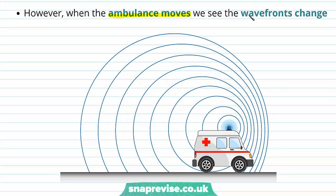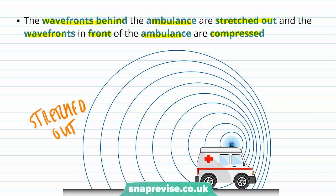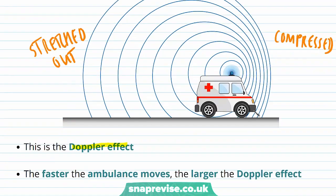However, when the ambulance moves we see that the wave fronts change. Here our ambulance is moving with a velocity V and we can see that the wave fronts are no longer symmetric on either side. In fact the wave fronts behind the ambulance are stretched out and the wave fronts in front of the ambulance are compressed. And this is the Doppler effect.